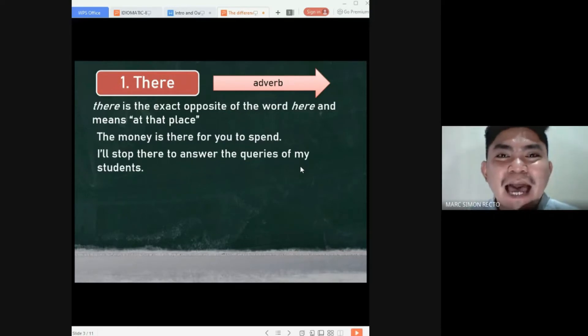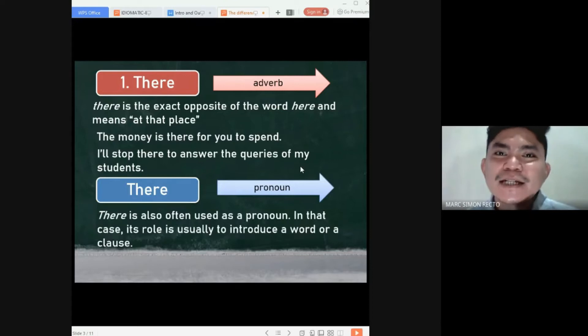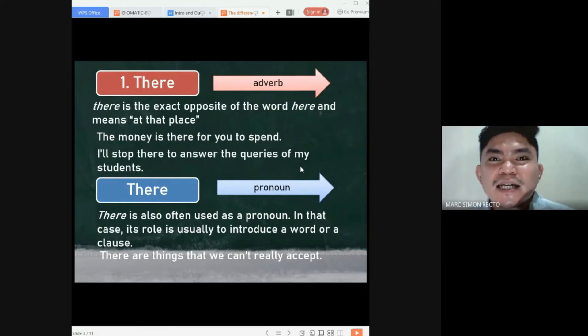Another function of there is as a pronoun. It is often used as a pronoun, meaning its role is usually to introduce a word or a clause. For example, there are things that we can't really accept. This one, the word there, is no longer serving as an adverb. It now serves as a pronoun.